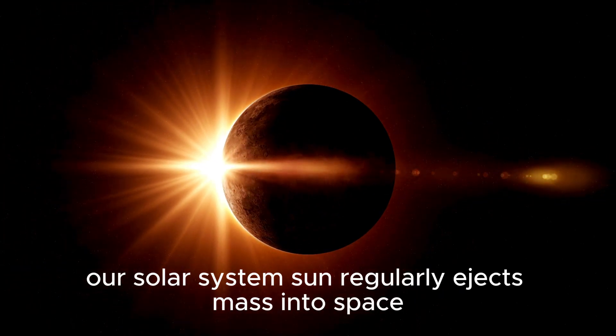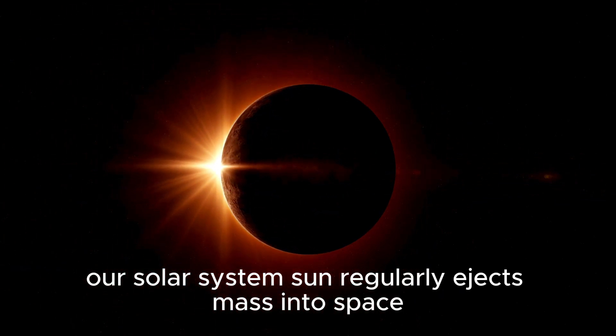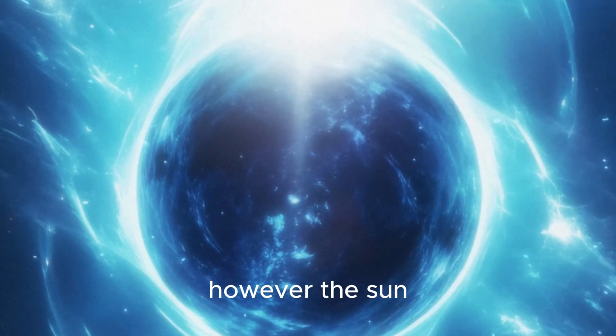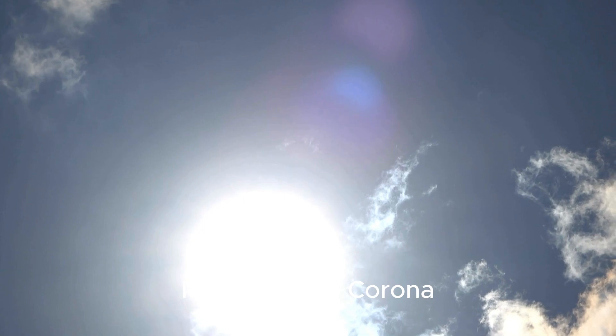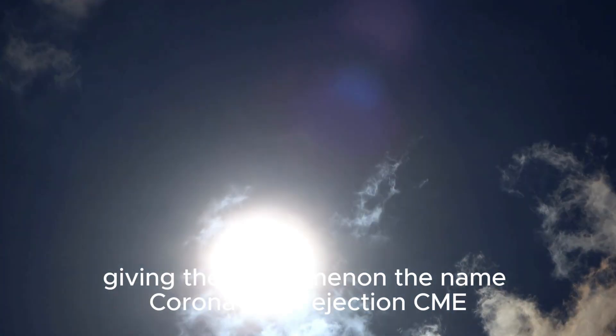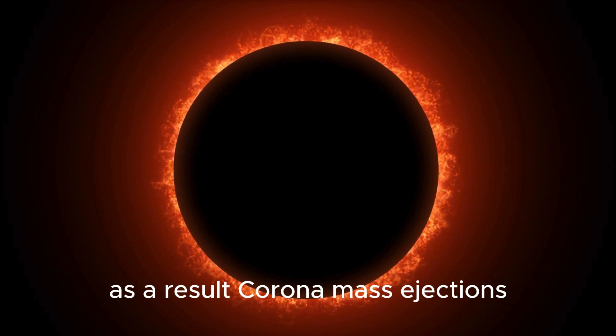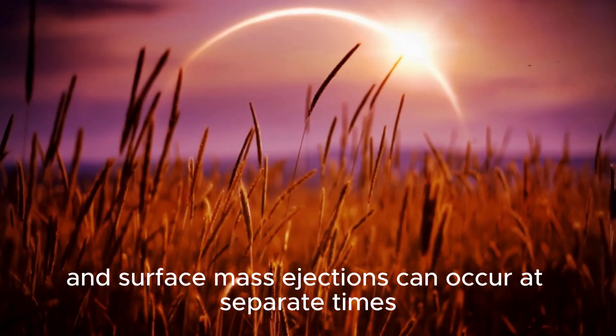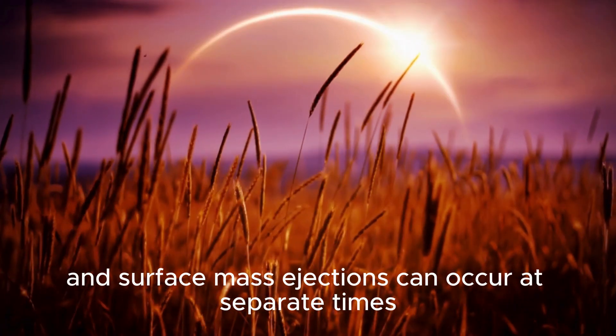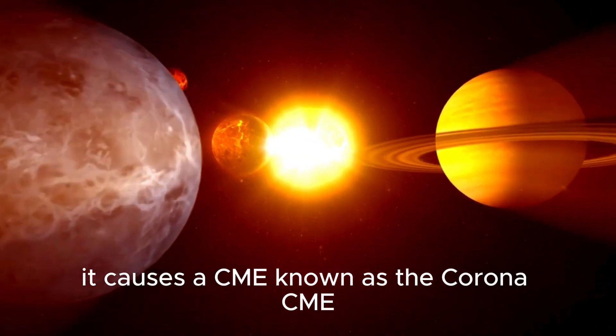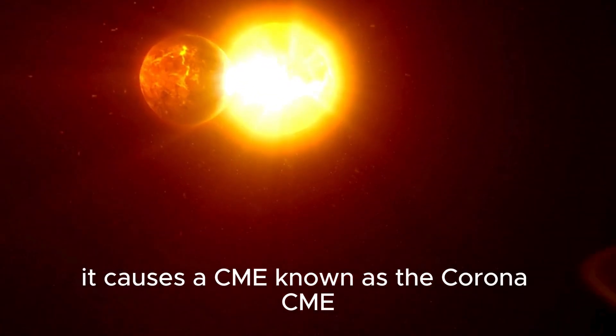Our solar system's Sun regularly ejects mass into space, which is known as solar flares. However, the Sun only exhales tiny fragments of its outer atmosphere, known as the corona, giving the phenomenon the name coronal mass ejection, or CME. As a result, coronal mass ejections and surface mass ejections can occur at separate times. When a star ejects a portion of its unstable outer atmosphere, it causes a CME, known as the corona CME.